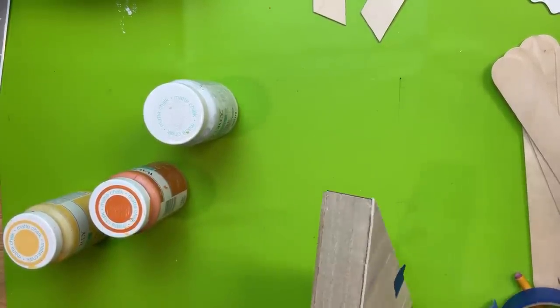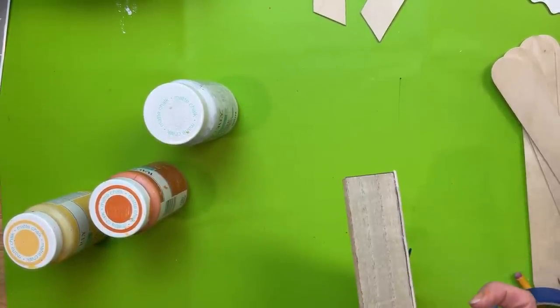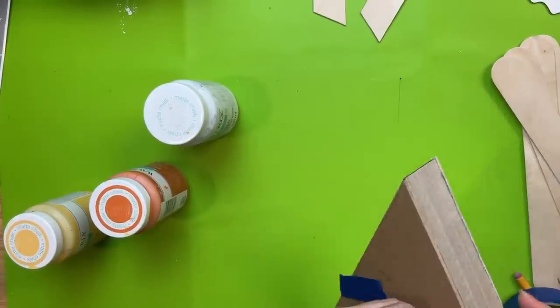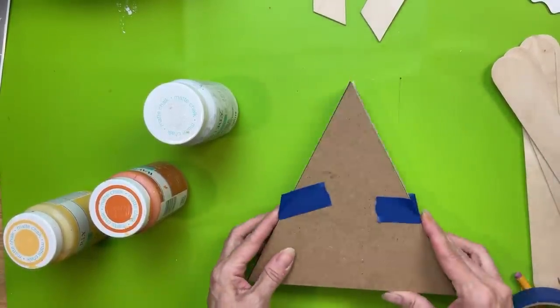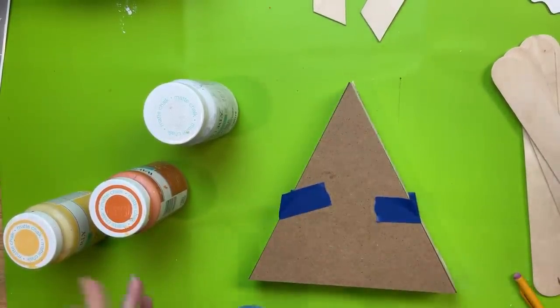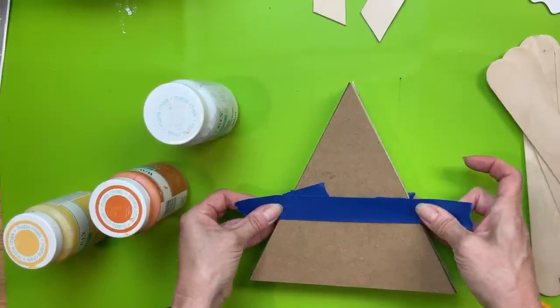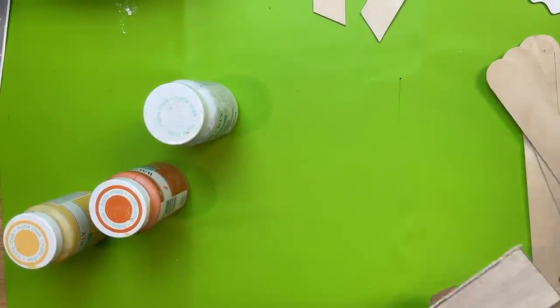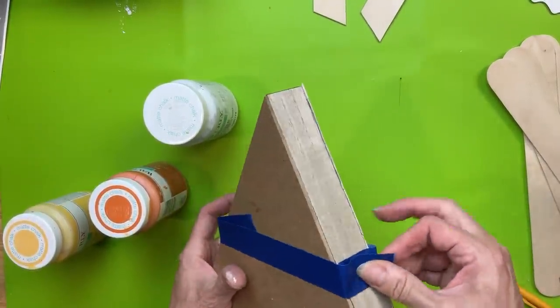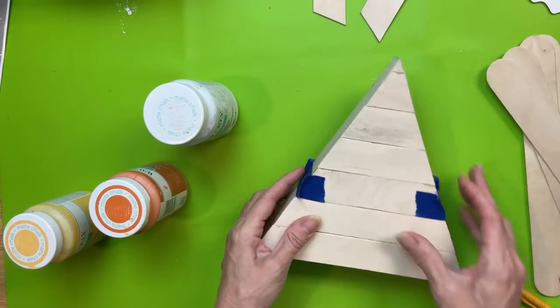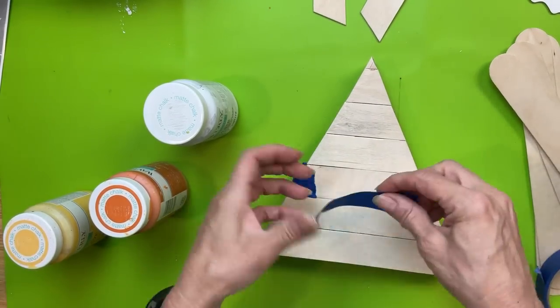I'm going to use some painter's tape to mark off the bottom section and the top section of our candy corn all the way around the triangle shape, then we'll be able to paint our bottom section yellow and our top section white. Then once those are done, we will re-tape and paint our middle section orange.